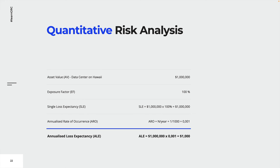Let's try to analyze our volcano risk with this methodology. We assume the value of the data center is 1 million dollars. If the data center is hit by a volcano eruption, there would be nothing left of it, so we set the exposure factor to 100%. The single loss expectancy, which is the product of asset value and exposure factor, is therefore 1 million dollars as well.